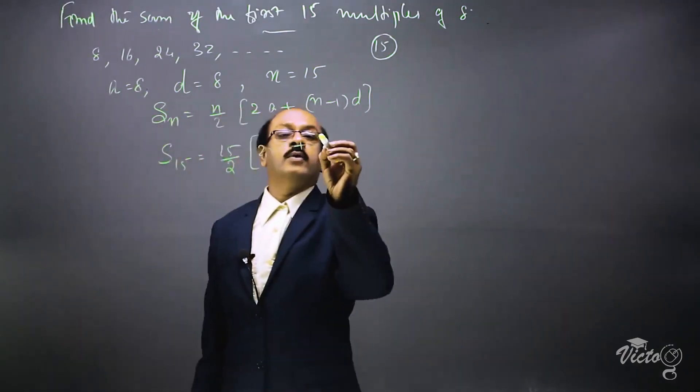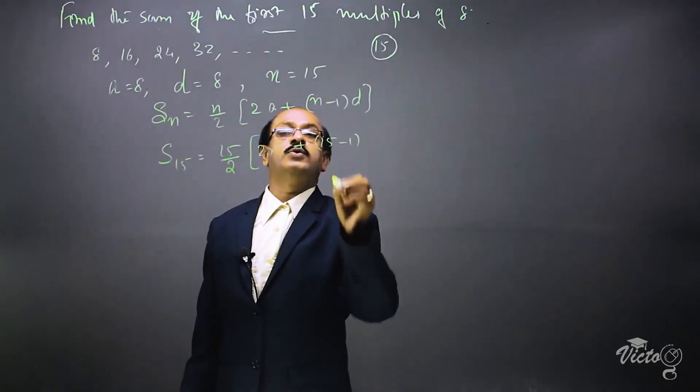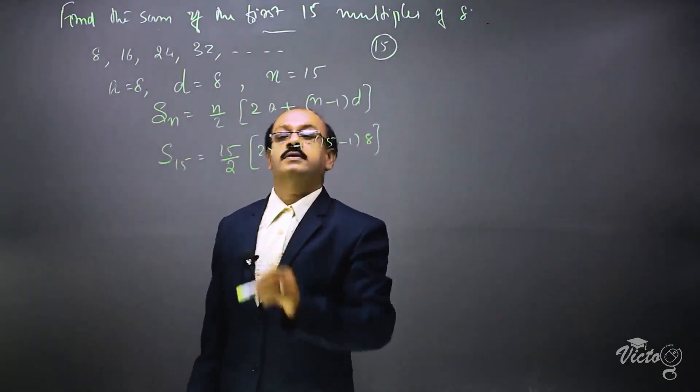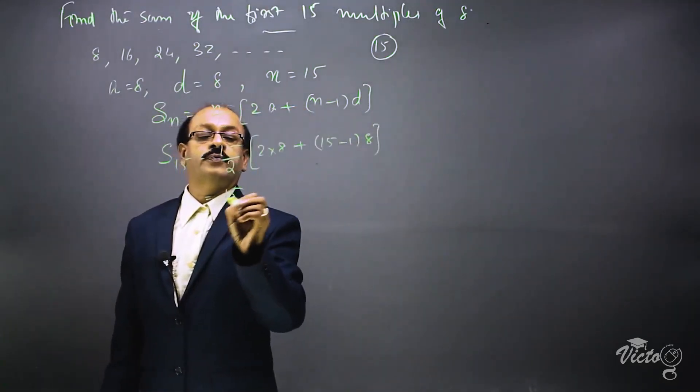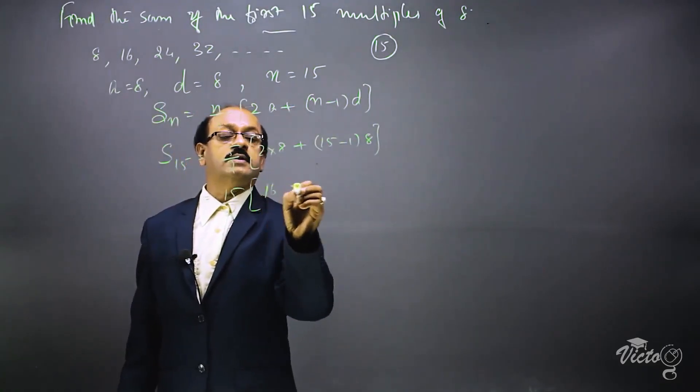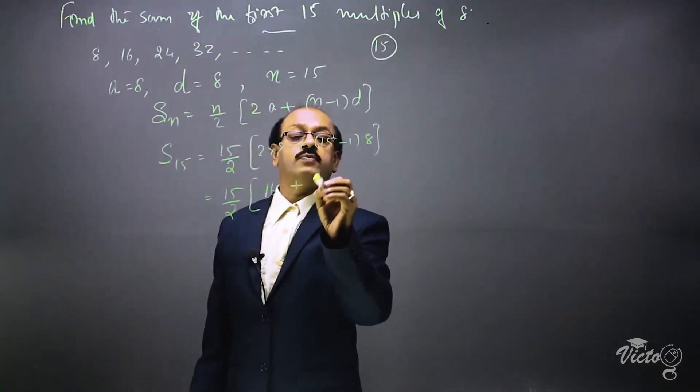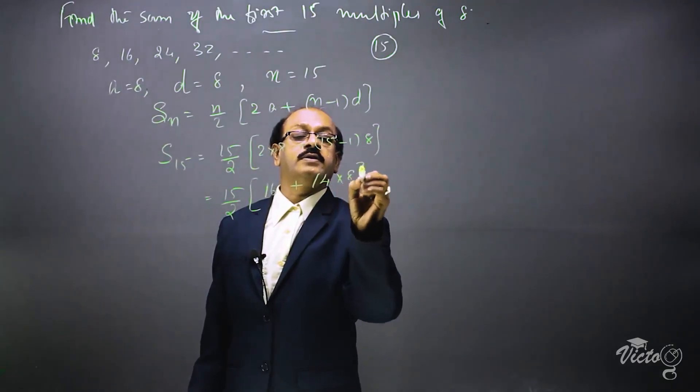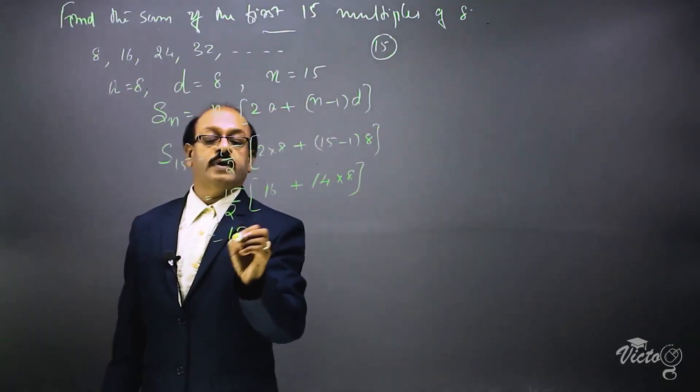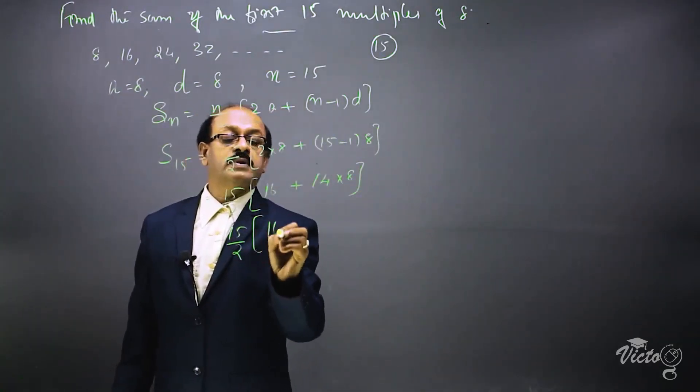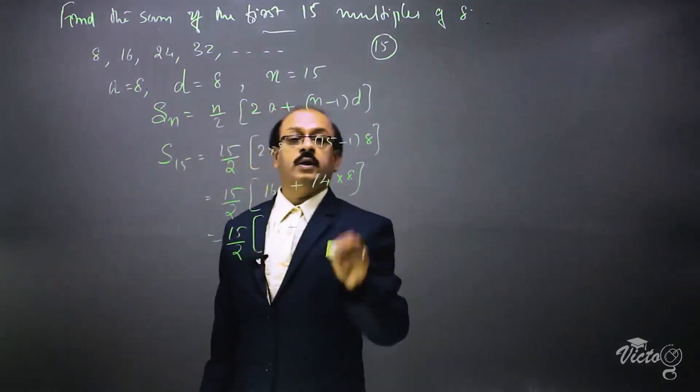Here 15 by 2, 2 into 8 is 16 plus 15 minus 1 is 14 into 8. This is 15 by 2, 16 plus 14 into 8. Multiply 14 by 8, that's 112.